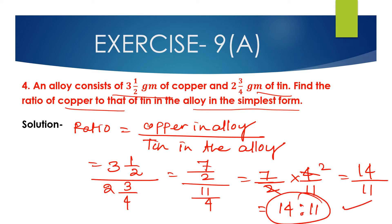14:11 is the ratio of copper to tin in the alloy, and 14:11 is the simplest form of the ratio 3.5 grams to 2 and 3/4 grams. So the answer is 14:11.